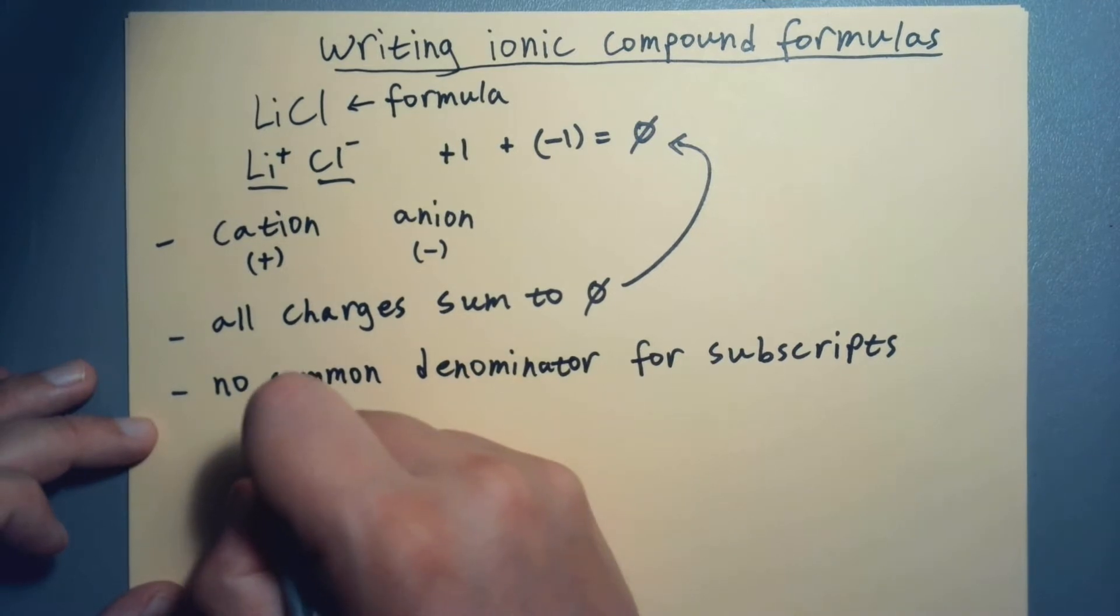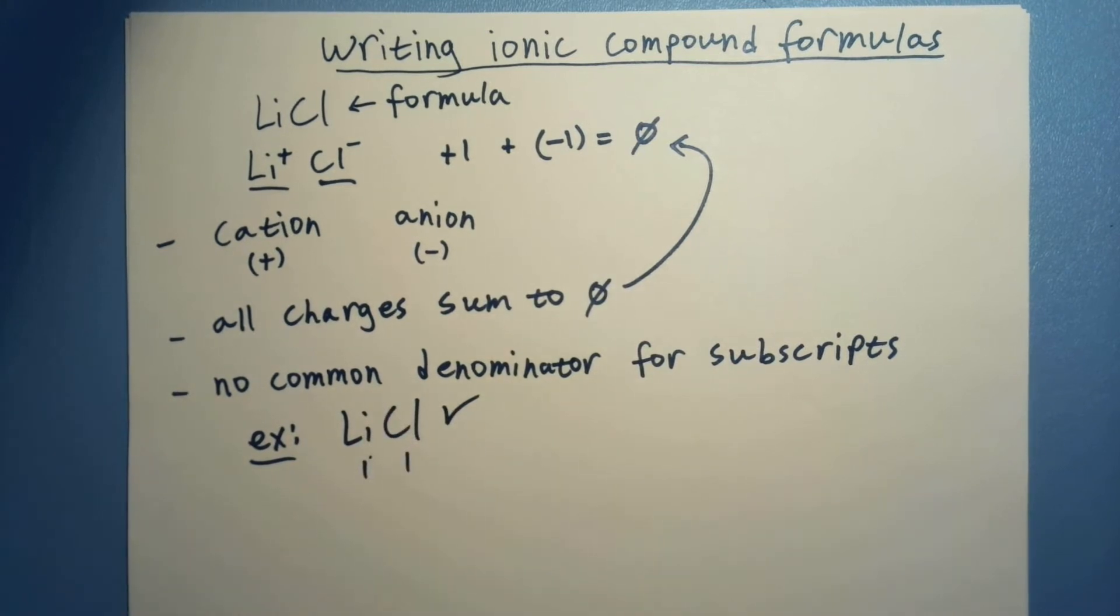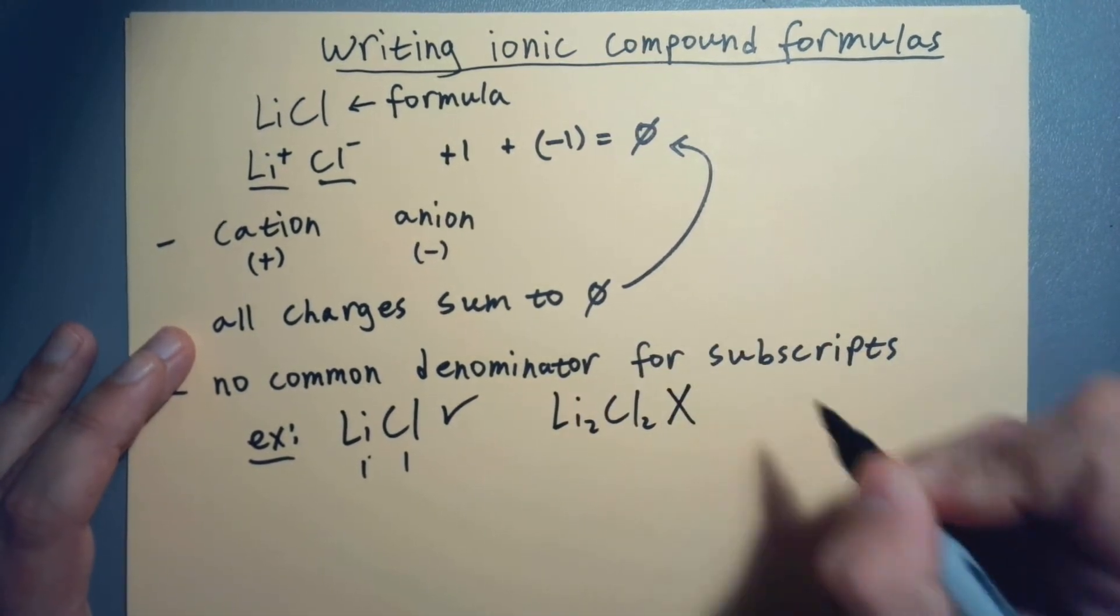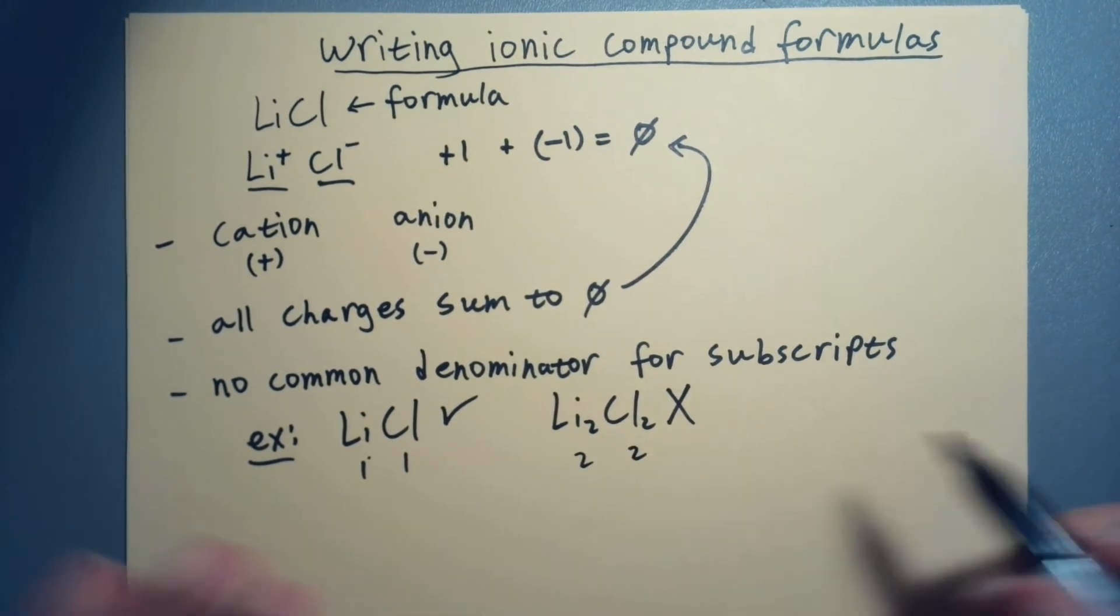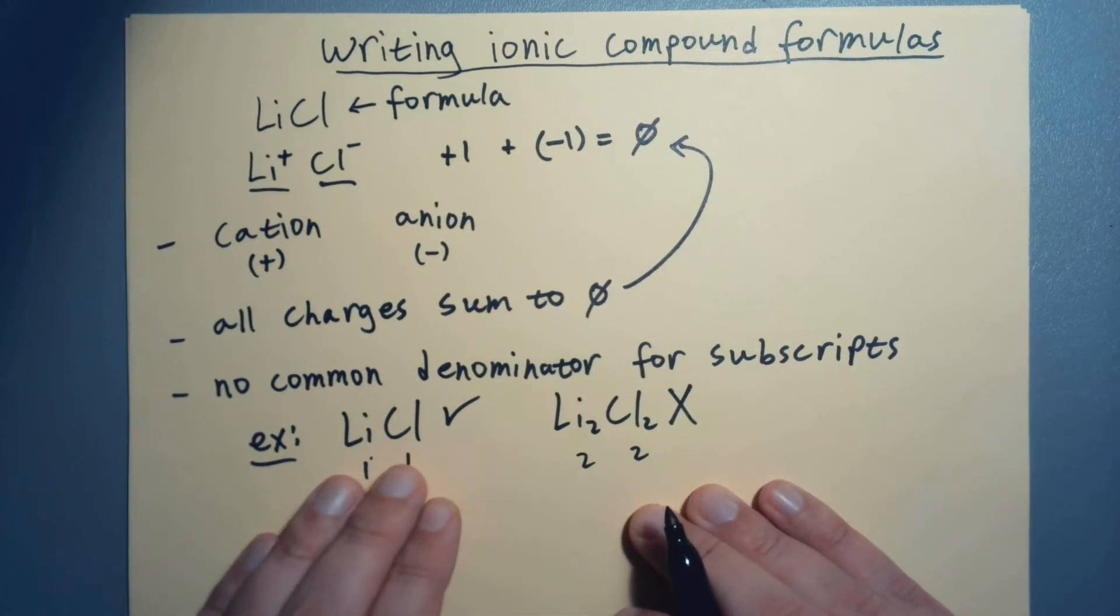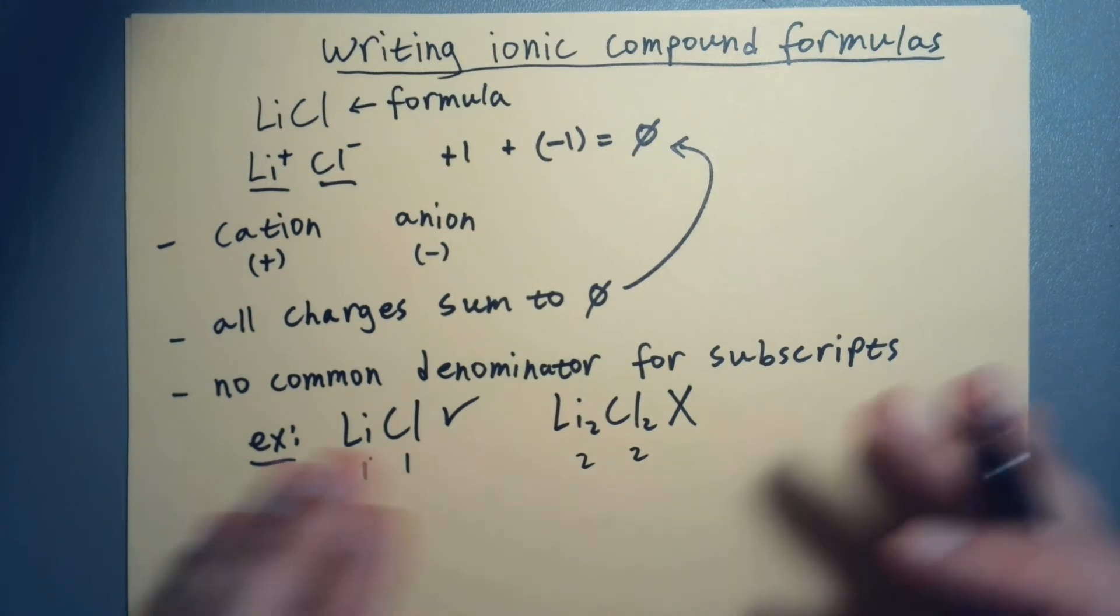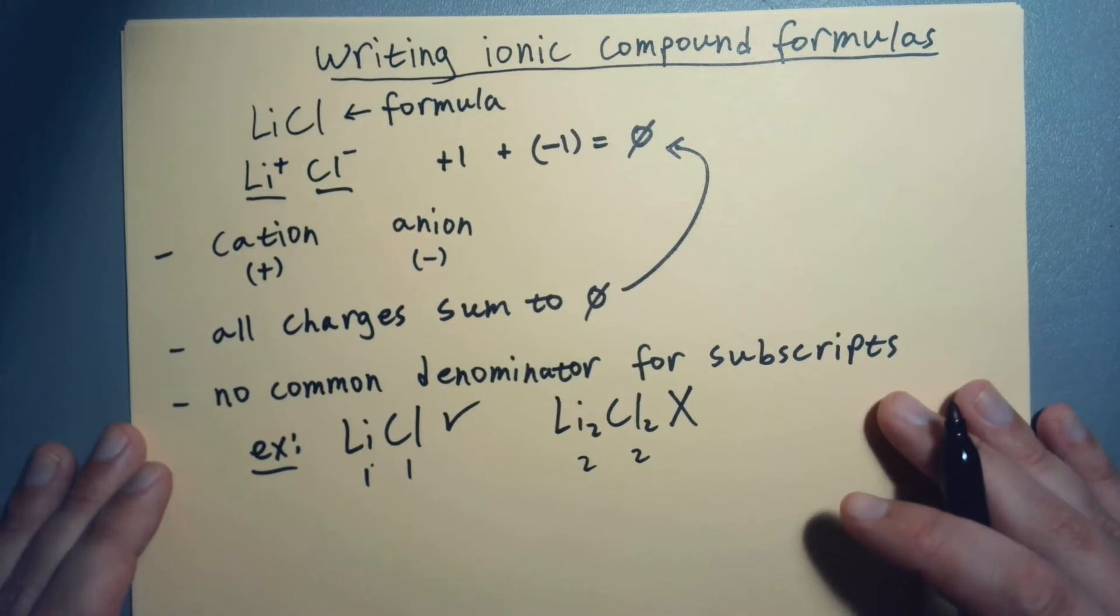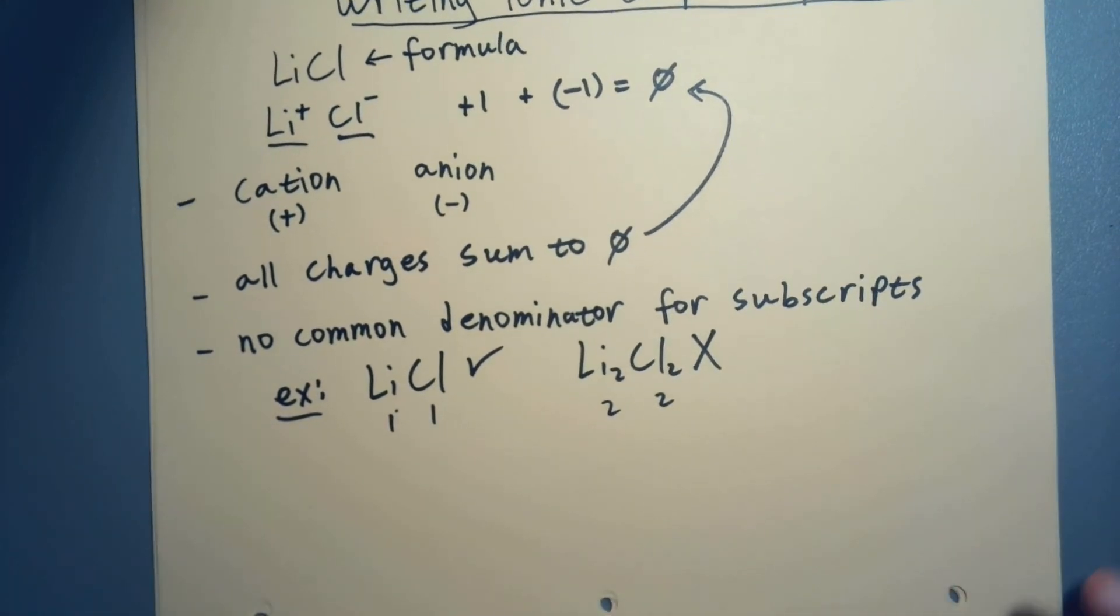So there's no common denominator for the subscripts. For example, what do I mean here? LiCl—good, that's a one and a one. I mean, you know, common denominator one, what can you do? But if we have something like Li₂Cl₂, that's bad because this is a two and a two. They have a common denominator of two. So we want to always make sure it's the lowest common denominator set. If you can divide these by the same number, you just do that.